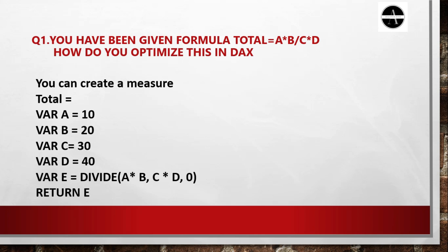Here we have used the DIVIDE function. In the bracket, we have written A multiplied by B as the numerator, then C multiplied by D as the denominator, and then the alternate result as zero. Finally, we return variable E. This is how we complete this scenario-based question.